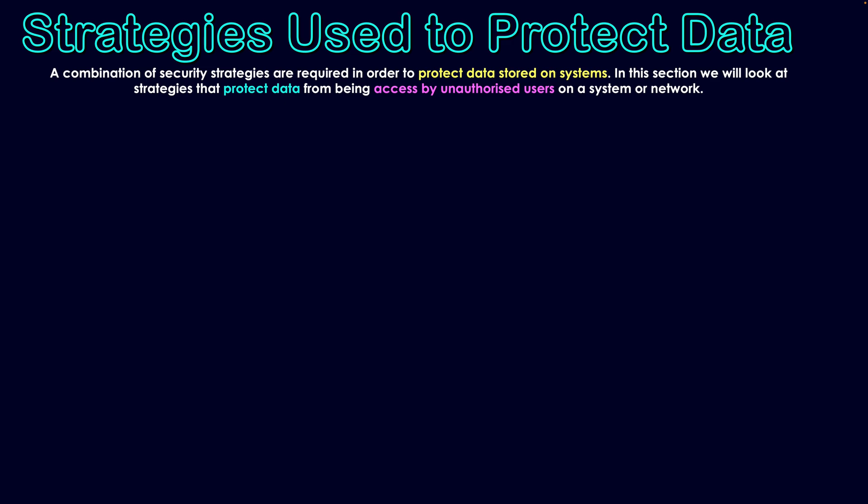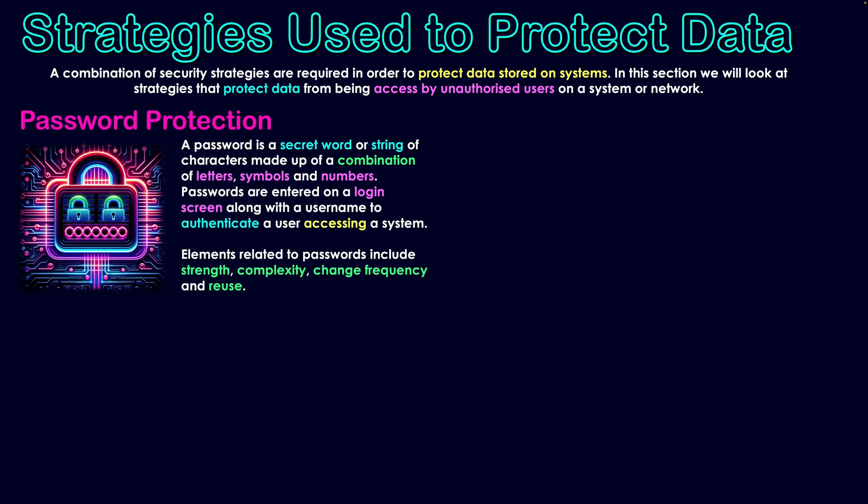The first tool is password protection. A password is a secret word or string of characters made up of a combination of letters, symbols, and numbers. Passwords are entered on a login screen along with a username to authenticate a user accessing a system, helping identify who is entering the network and whether or not they're allowed to view specific information stored on that system or network.